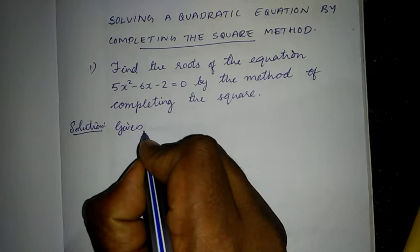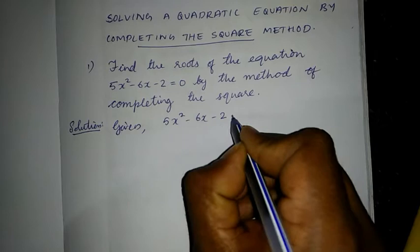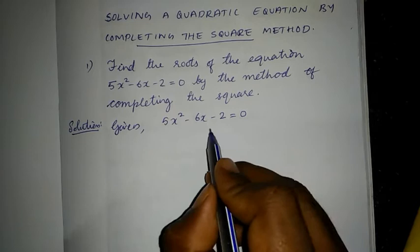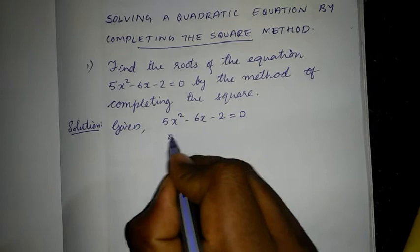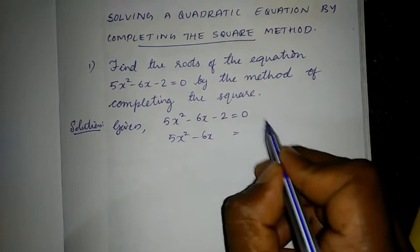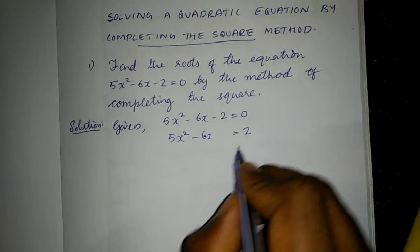The given quadratic equation is 5x² minus 6x minus 2 = 0. I will teach you two methods. In the first method, whenever you see a constant number, take it to the right hand side. So 5x² minus 6x we keep on the LHS, and we transfer the constant to the RHS, so it becomes positive 2.